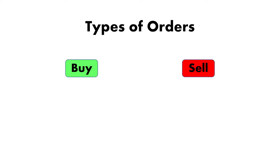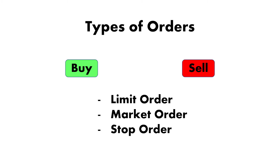The two types of orders that all of us know are the buy and the sell. But there are actually three different types of orders that you can use for both sides — the limit order, the market order, and the stop order.